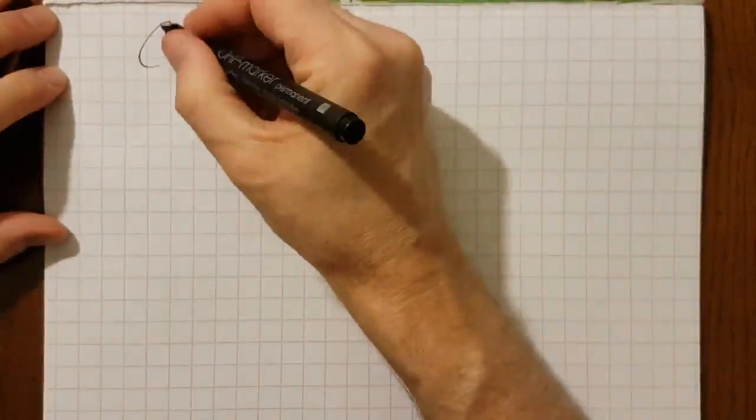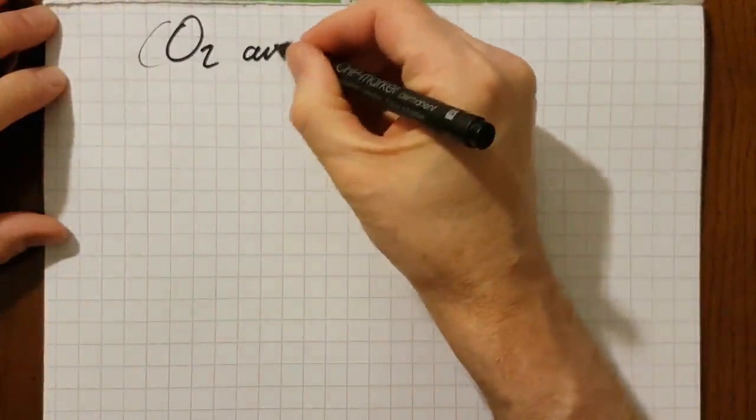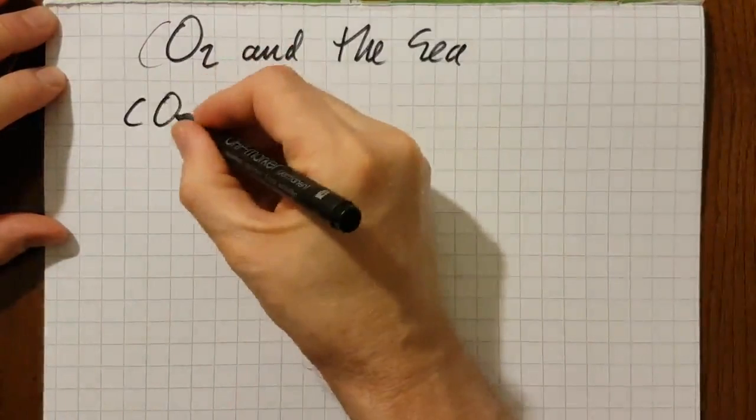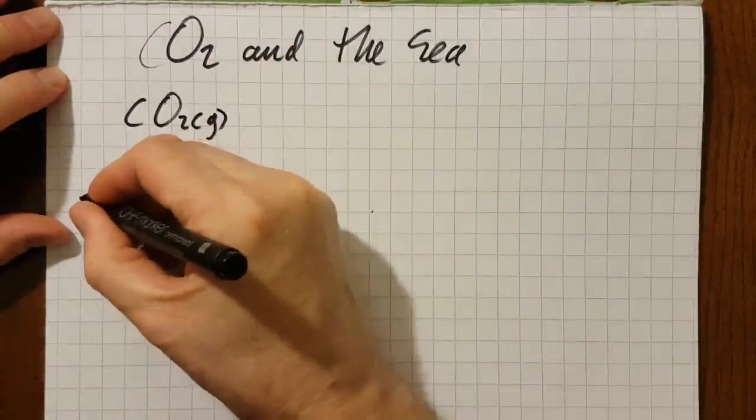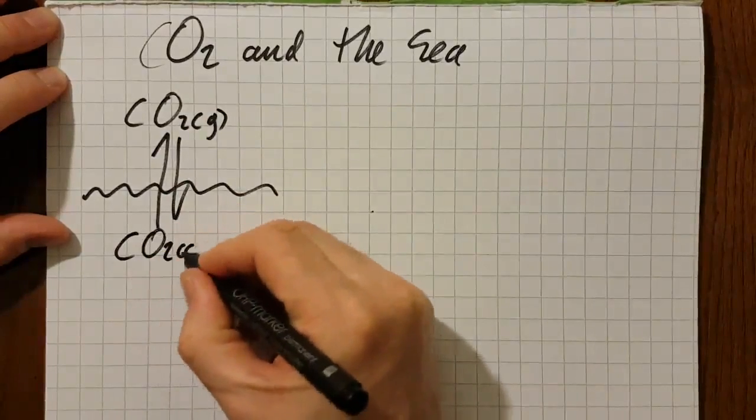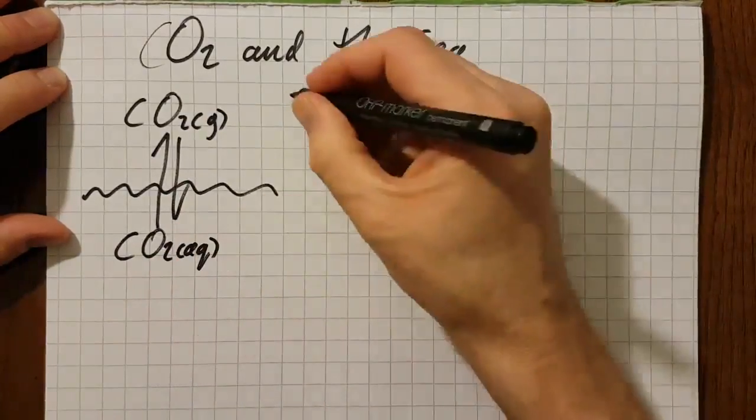Carbon dioxide and the sea. Carbon dioxide is a gas in the atmosphere and it is in a heterogeneous equilibrium with aqueous carbon dioxide in the sea.